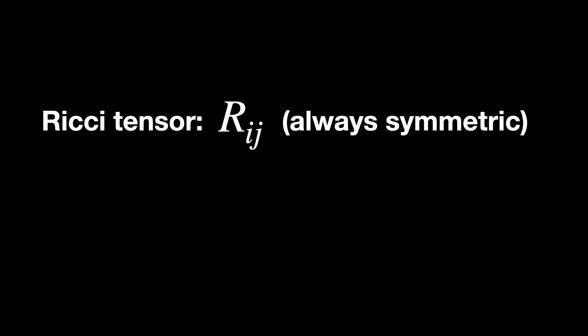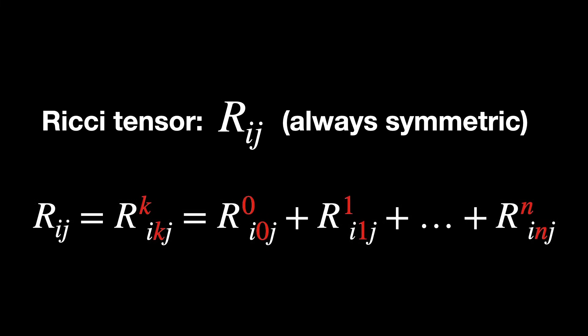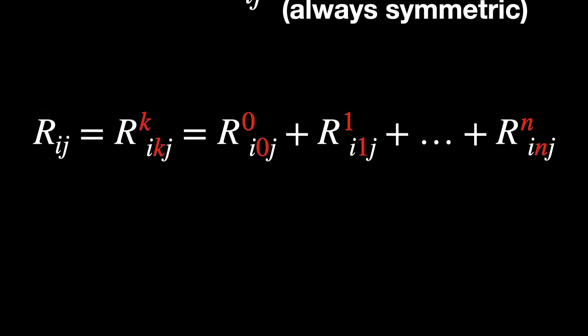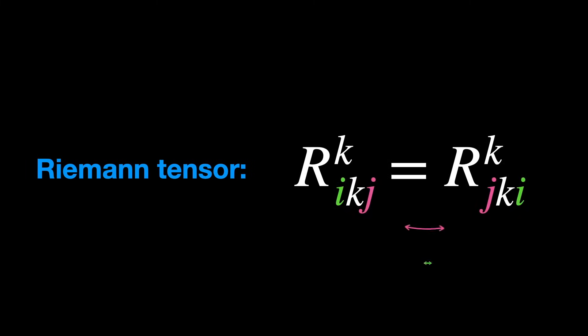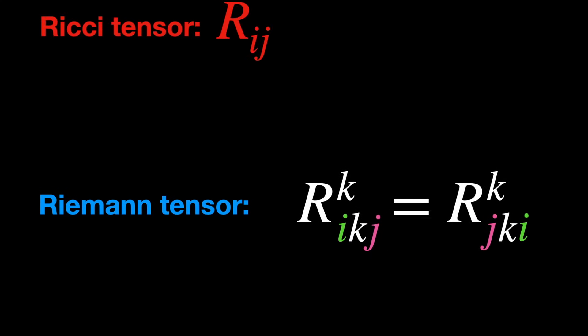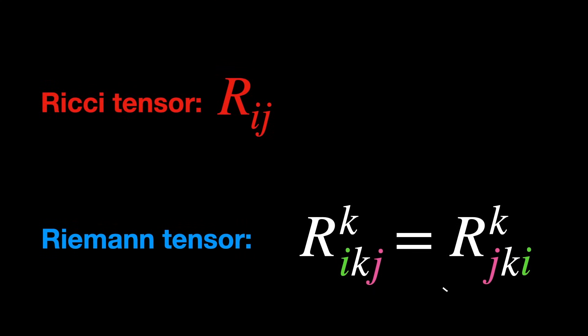By the way, just a technical detail here, the Ricci tensor is always symmetric. This is a direct consequence of the way in which it is built, in other words from the Riemann tensor via a contraction. We'll not get into too many details here, but the Riemann tensor satisfies a special symmetry, and this makes the Ricci tensor into a symmetric matrix.